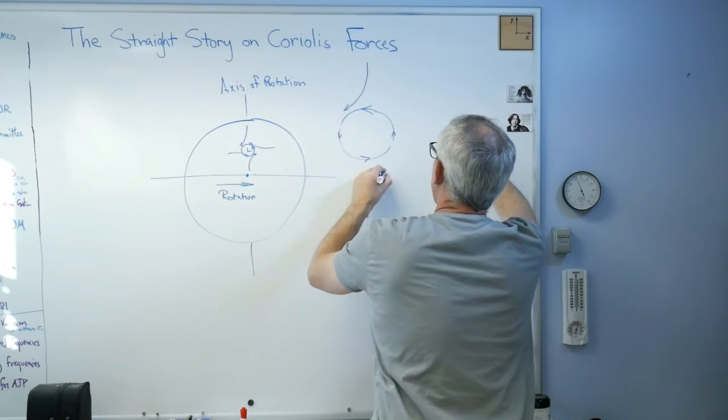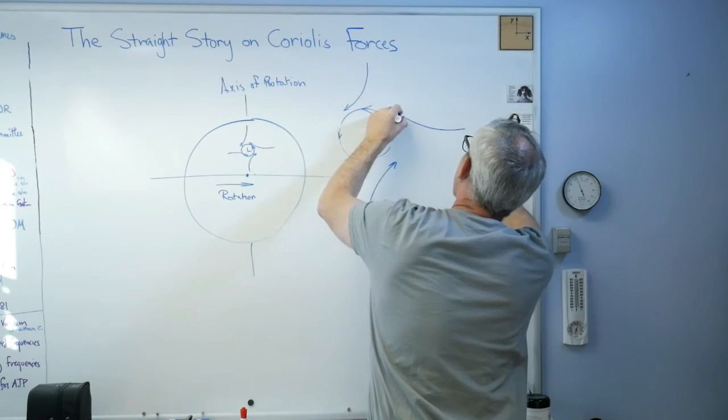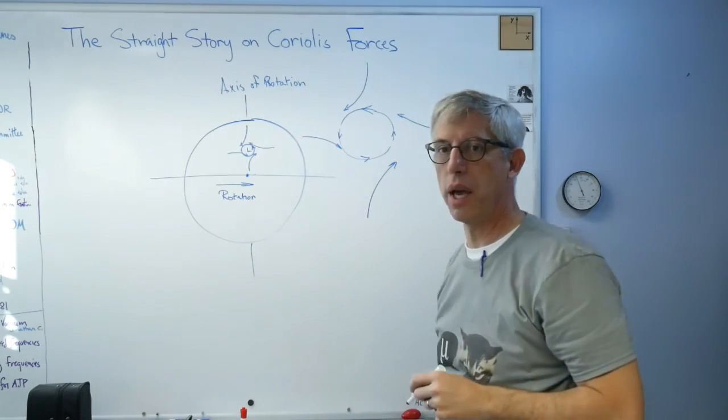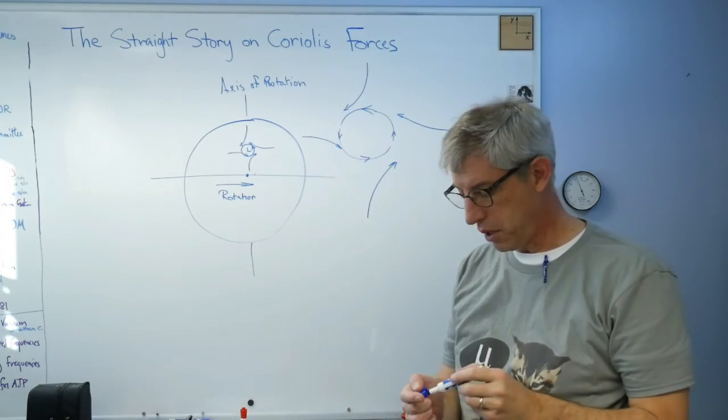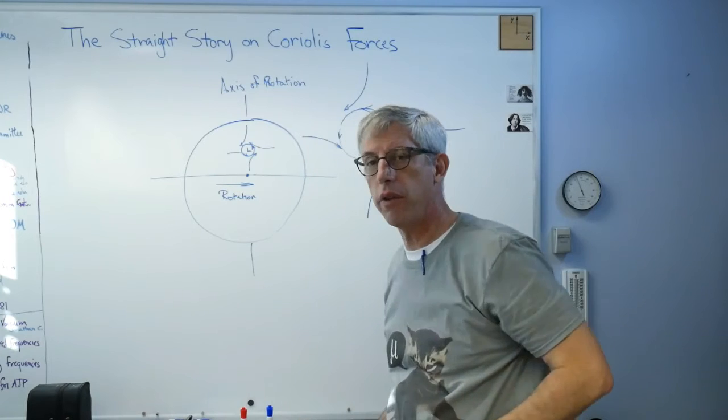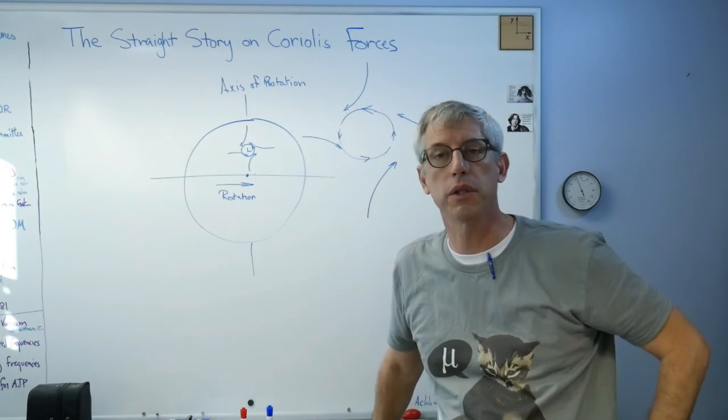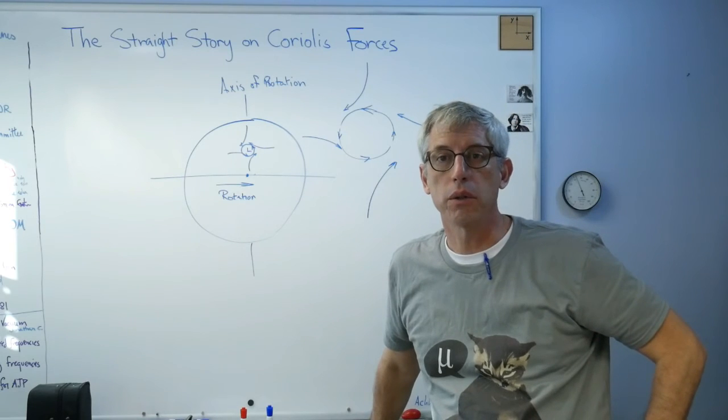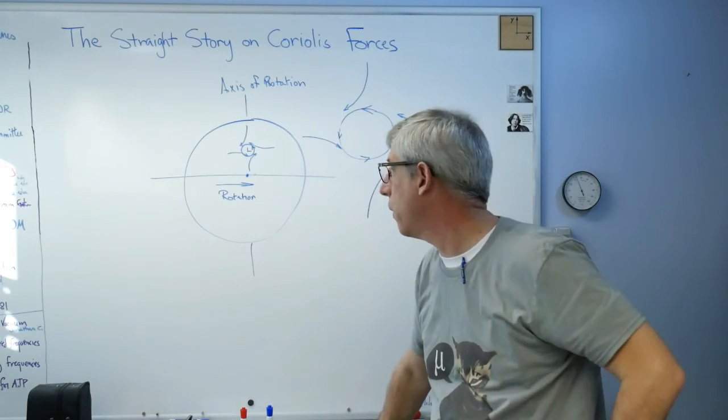It goes that way. That's how you get counterclockwise motion in hurricanes in the northern hemisphere. In the southern hemisphere, of course, the forces are reversed and the hurricane or the cyclone is going to rotate the opposite direction. So there you go—there's the straight story on Coriolis forces.